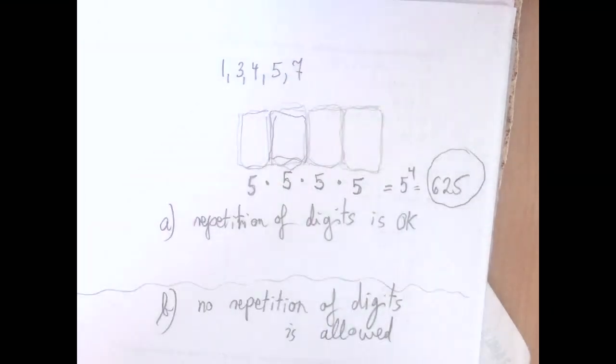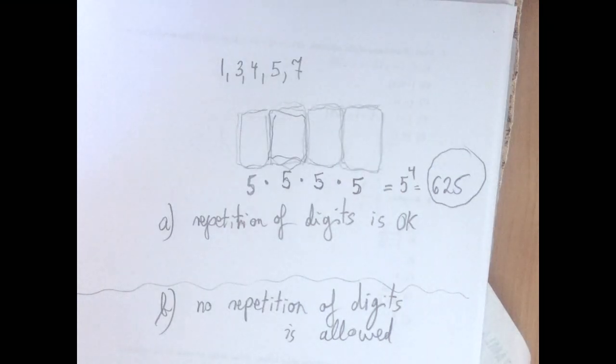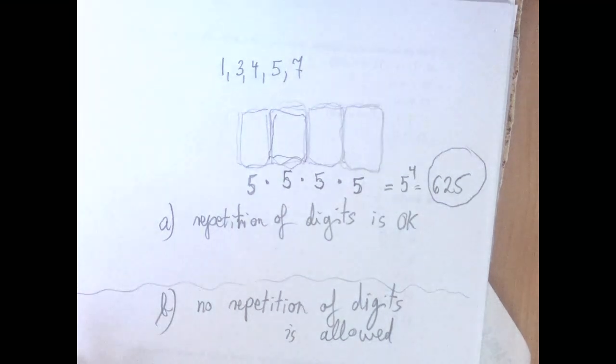So this is a lot of cases, right? This is five to the fourth power, 625. We can still list this, but it would be uncomfortable. Okay, so now let's see part B.